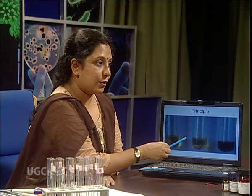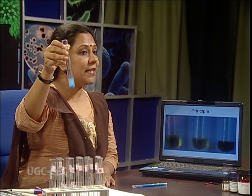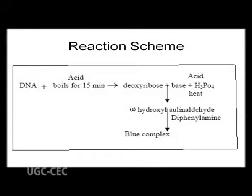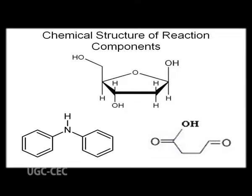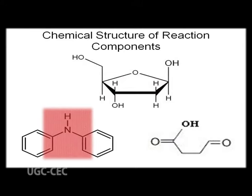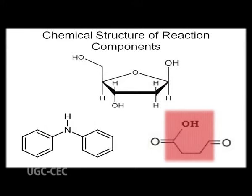You can observe the production of blue color by the DPA reaction with DNA. The reaction scheme shows that by acid treatment, the deoxyribose sugar is hydrolyzed and omega-hydroxylaevulinic aldehyde is produced. Along with the DPA reagent, it develops an intense blue coloration. The key players are deoxyribose, diphenylamine reagent, and hydroxylaevulinic aldehyde — they are responsible for developing this blue coloration.